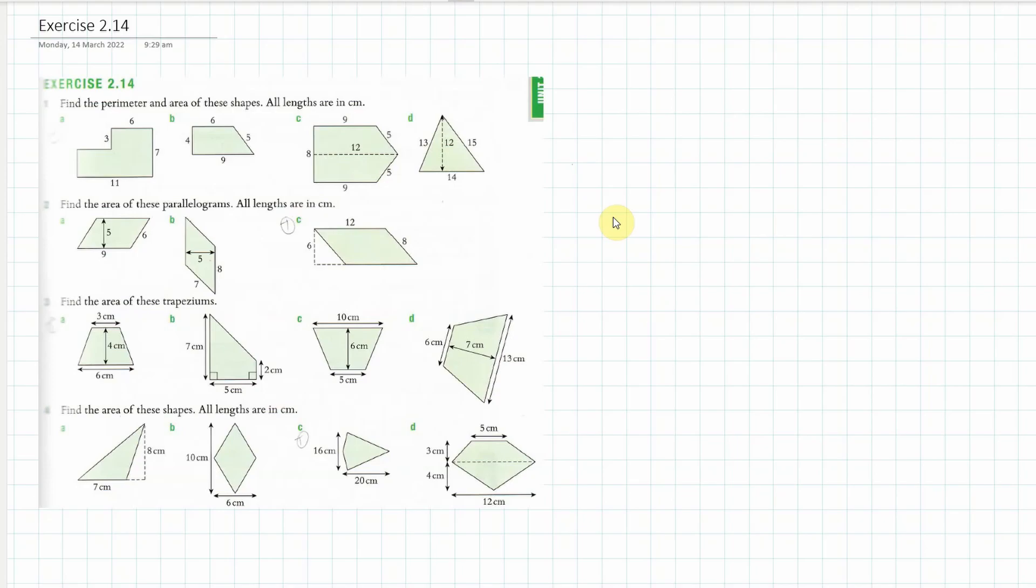So what am I going to do? The first one, we try to find the perimeter and area of these shapes. I'll do A. For the perimeter, you can see we've got this and this going up which is equal to this. This bit plus this bit is equal to 7, so this must be 4.